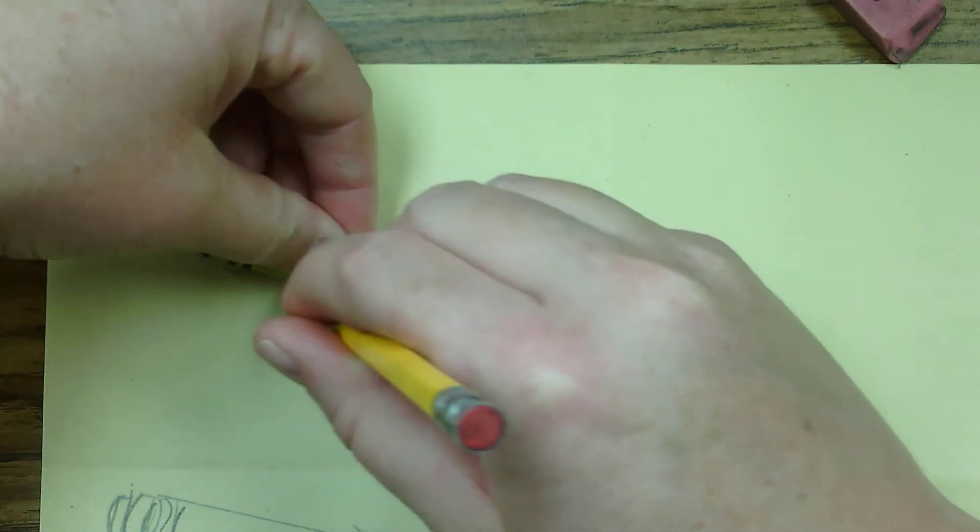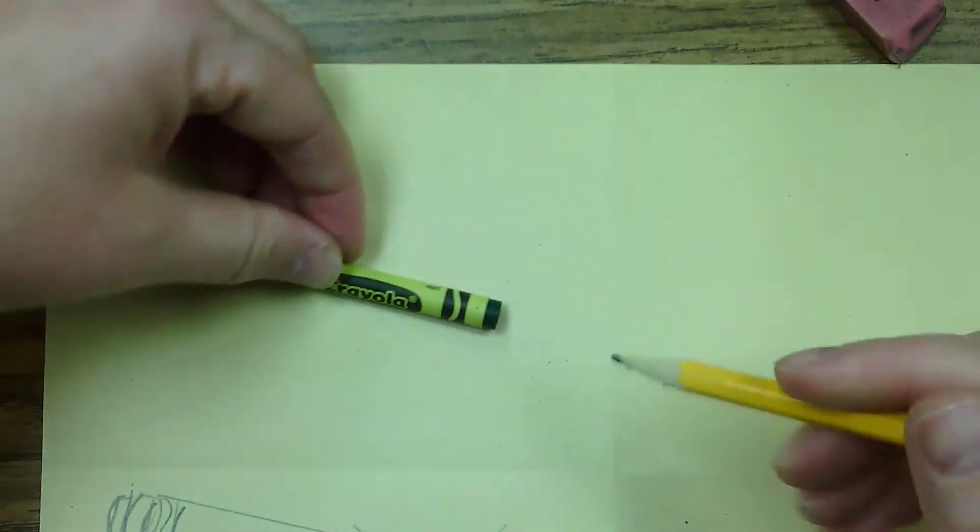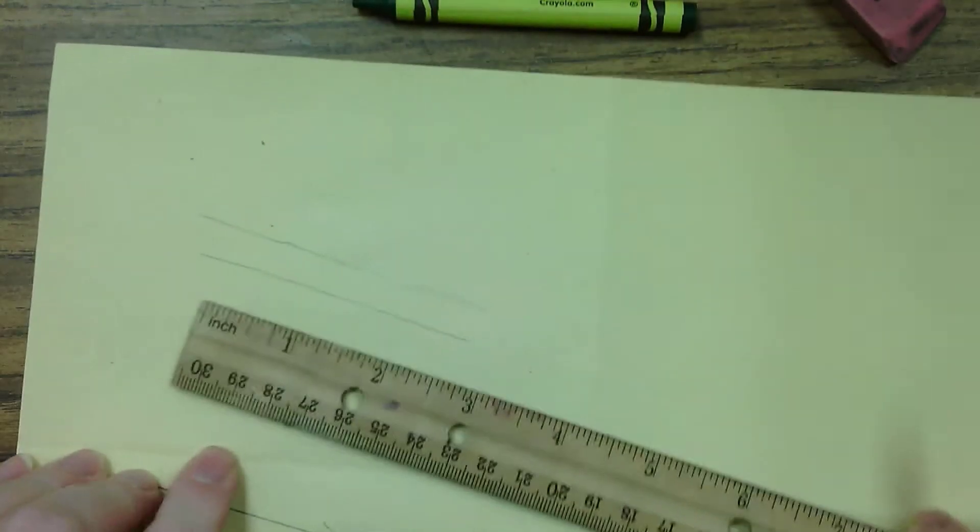The easiest way, I think, is to just trace it. That way you don't have to measure the crayon. So if you have a crayon handy, place it down and trace it.